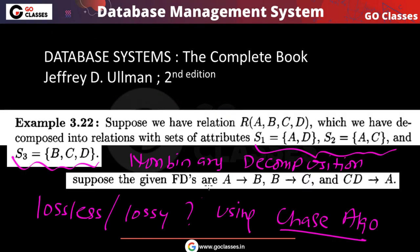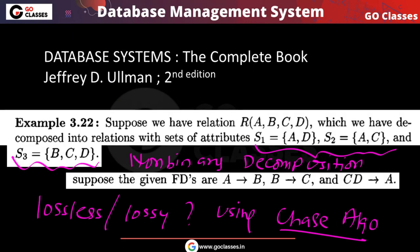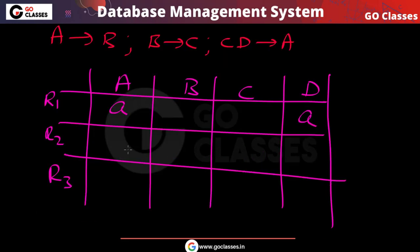In sub-relation R1 we have attributes A and D, so we make entries there. In R2 we have A and C, so entries are made there. In R3 we have B, C, D, so entries are made for those three. This is the initial configuration.